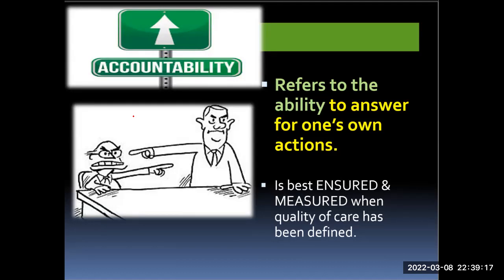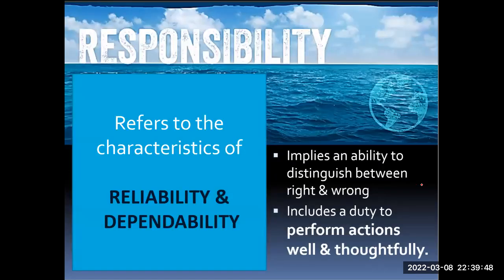Accountability refers to the ability to answer for one's own actions and is best ensured when quality of care has been defined. It means taking or being assigned responsibility for something you have done or are supposed to do — for example, when an employee admits an error made in a laboratory testing or procedure. Responsibility refers to the characteristics of reliability and dependability, implying an ability to distinguish between right and wrong and a duty to perform actions well and thoughtfully. In philosophy, moral responsibility is the status of morally deserving praise, blame, reward, or punishment for an act or omission in accordance with one's moral obligations. Deciding what counts as morally obligatory is a principal concern of ethics.